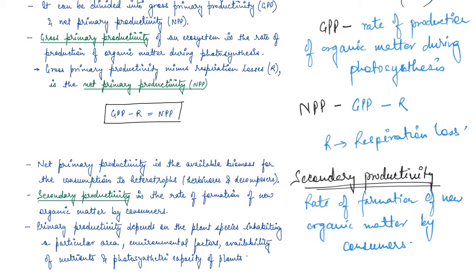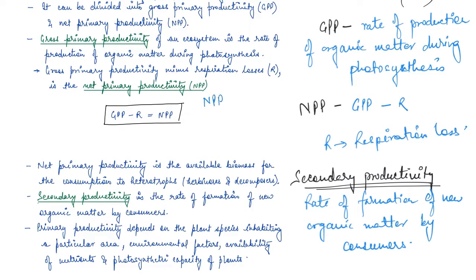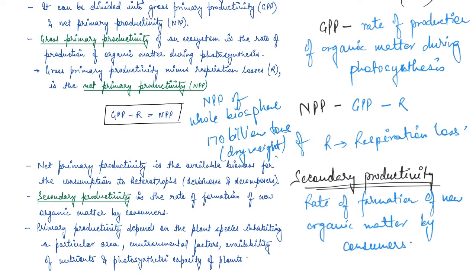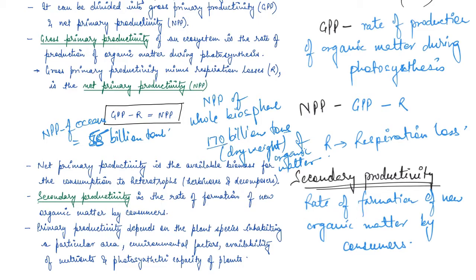The annual net primary productivity of the whole biosphere is 170 billion tons of dry weight of organic matter. Despite oceans occupying 70 percent of the surface, the net primary productivity of oceans is only 55 billion tons. The rest, out of 170 billion tons, comes from land.